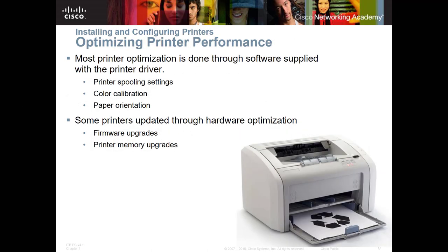You can also optimize printer performance in a couple of ways. Printer optimization is usually done through the software supplied with the printer driver — you can set printer spooling settings, do color calibration if you have a color printer, or set paper orientation to make sure it's feeding through properly. Some printers update through hardware optimization — you can sometimes add memory to the printer. I've worked with large Hewlett-Packard printers where we could add memory modules so the print spool could run inside the printer rather than on the network, saving network resources.